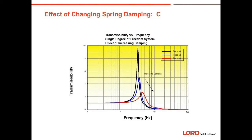Here's the effect of changing spring damping constant C on transmissibility. This is a typical transmissibility curve for natural rubber, shown by the black line — a damping factor with a resonant condition of 10. The next line is a blue line with more damping, somewhere in the range of 0.1 to 0.25, with a resonant condition of 0.5.